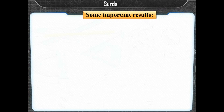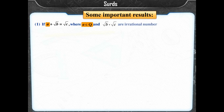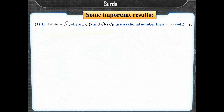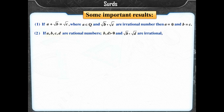We will use some results of SIRDS. Result 1: If A + √B = √C, where A belongs to Q and √B, √C are irrational numbers, then A = 0 and B = C. Result 2: If A, B, C, D are such that B, D > 0 and √B, √D are irrational, then A + √B = C + √D implies A = C and B = D.